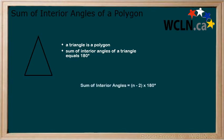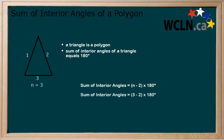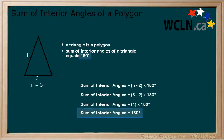Now let's compare to our formula. First, we already know that our answer should be 180 degrees. There are three sides to the triangle, so n equals 3. Replace n with 3 and solve. Our formula gives us a total of 180 degrees, which is what we expected.